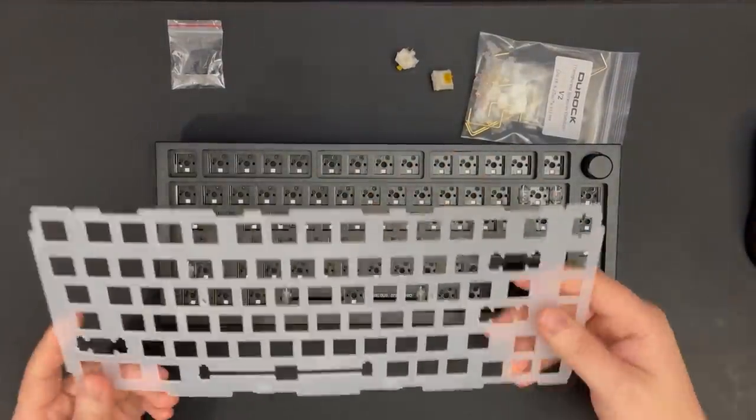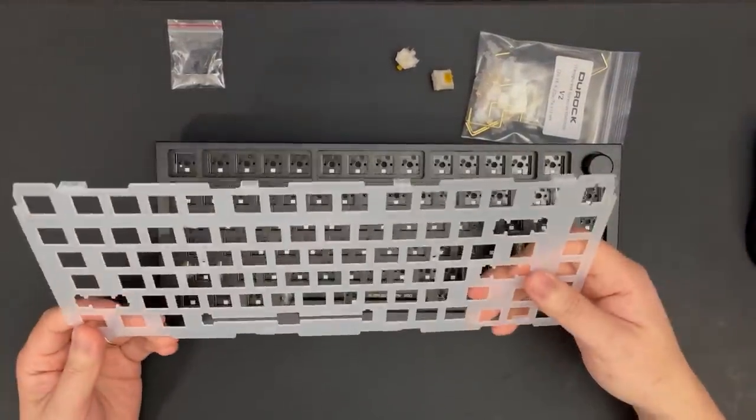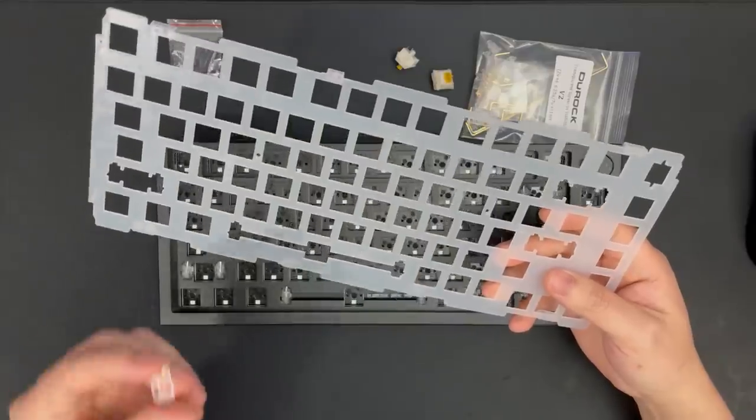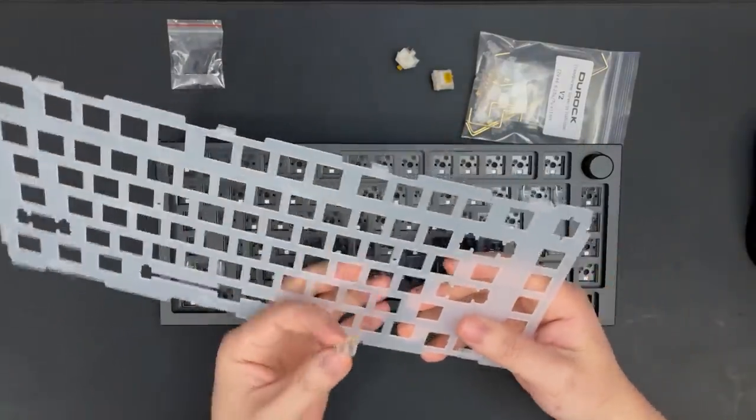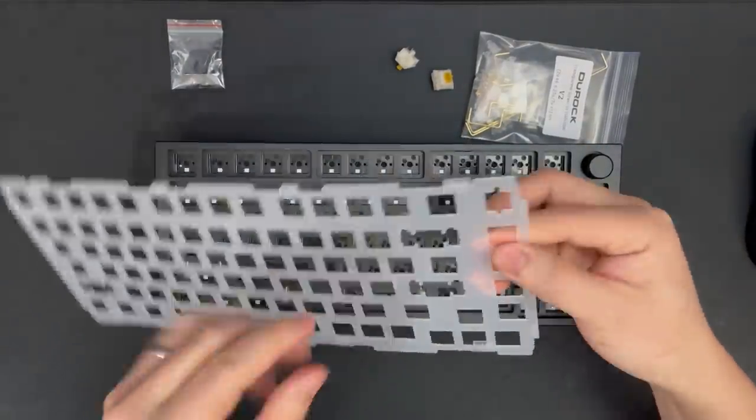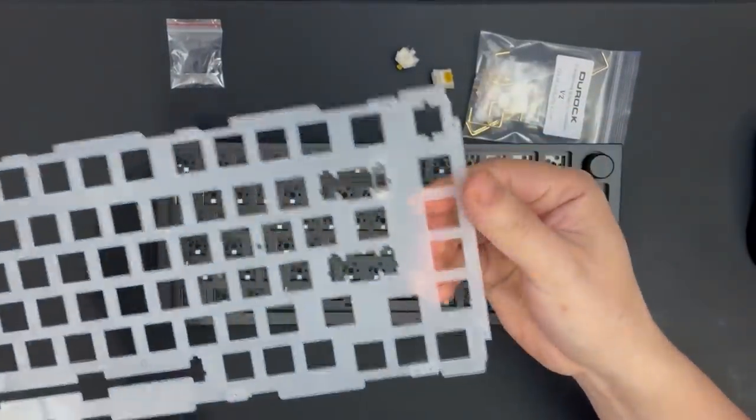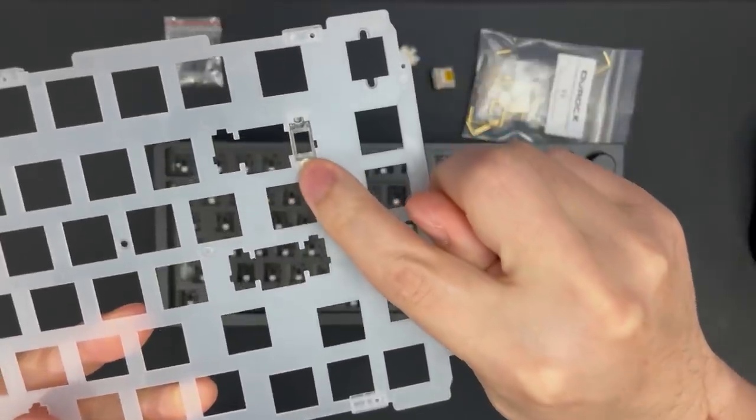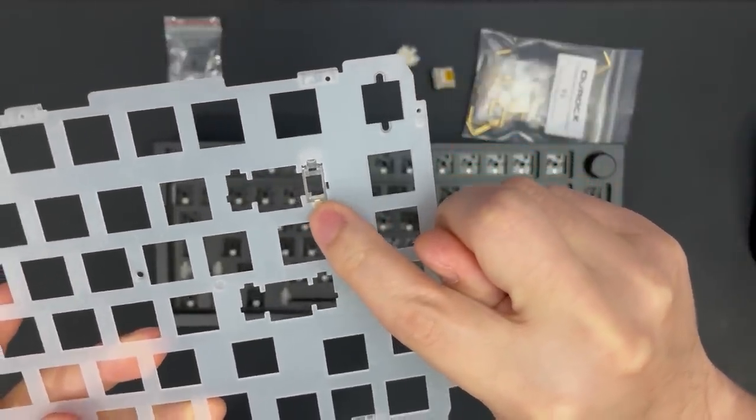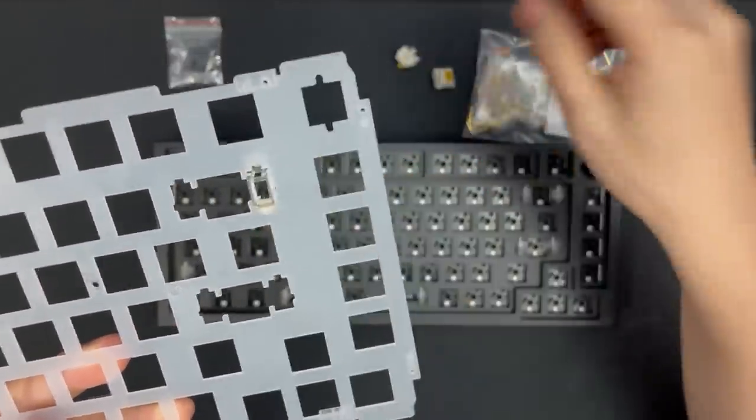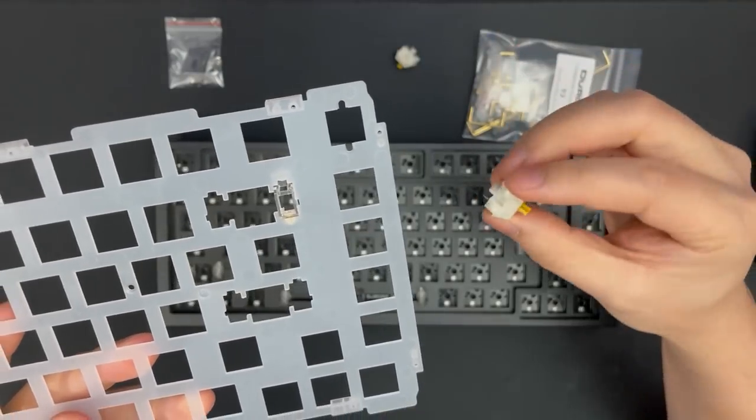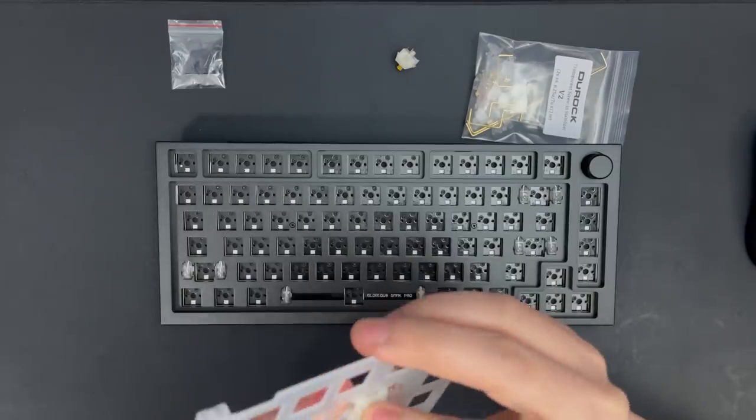One of the most common questions and complaints I've seen about the GMMK Pro plates is the compatibility with aftermarket stabs. We can easily confirm if the Duroc stabs will work by doing a test fitting with the stabilizer housing and the polycarbonate plate. While it does take a little bit of pressure and wiggling to get it to fit, it'll work just fine. There's a little bit of deformation of the plastic piece here, but as you can see, it doesn't interfere with the switch as that snaps in just fine.